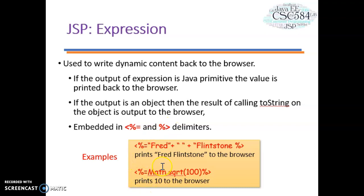This is an example of expression. The first one will print fred flintstone to the browser and the second one is using a Math function. You're calling Math.sqrt 100, so it will print out 10 to the browser.